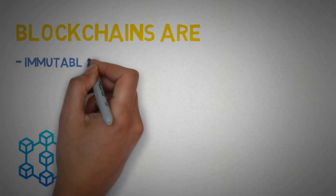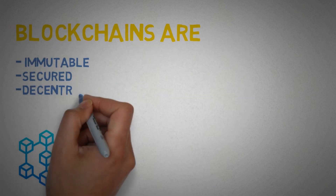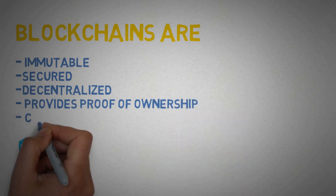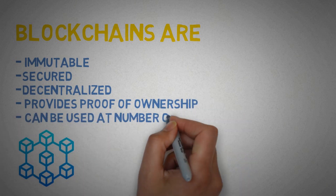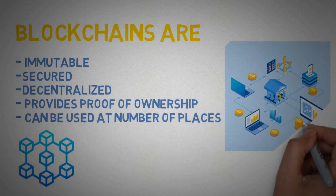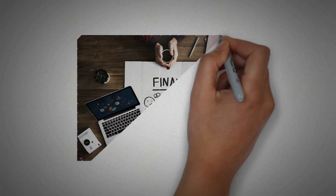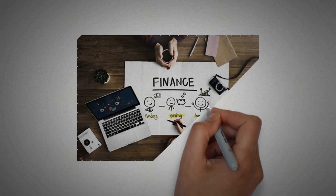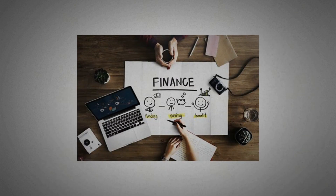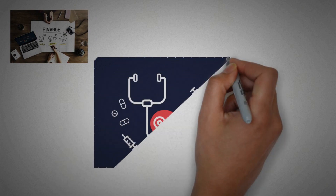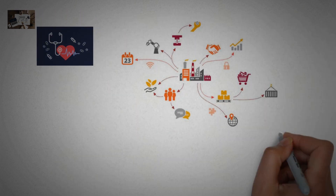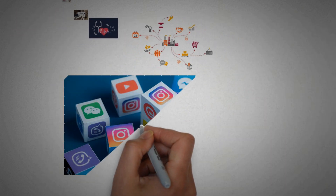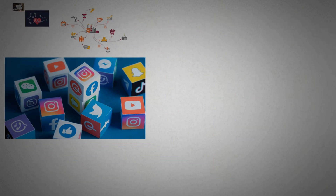So we learned about some of the major features of blockchain: blockchains are immutable, secured, decentralized, provide proof of ownership, and can be used in a number of places. Blockchains can be implemented in multiple sectors such as finance, healthcare, supply chain, social media, and educational institutions.